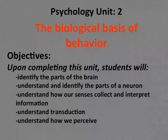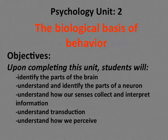Psychology Unit 2: The Biological Basis of Behavior. First we need to talk about the objectives of this unit. Upon completing this unit, students will be able to identify the parts of the brain, understand and identify the parts of a neuron, understand how our senses collect and interpret information, understand transduction, and understand how we perceive.